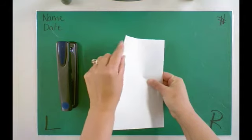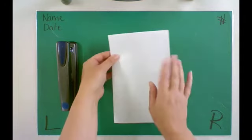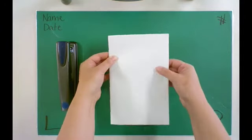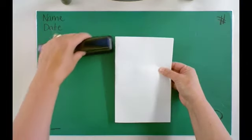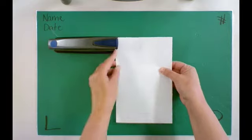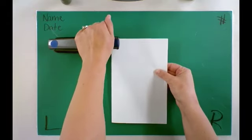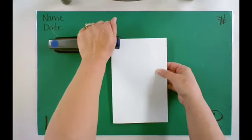Then you want to take the folded edge, not the alligator open edge, the folded closed edge, line your stapler up at the top of that folded edge, and staple the top.